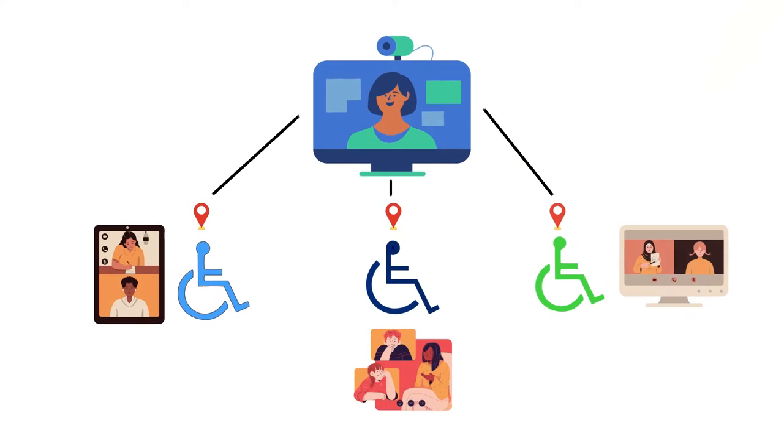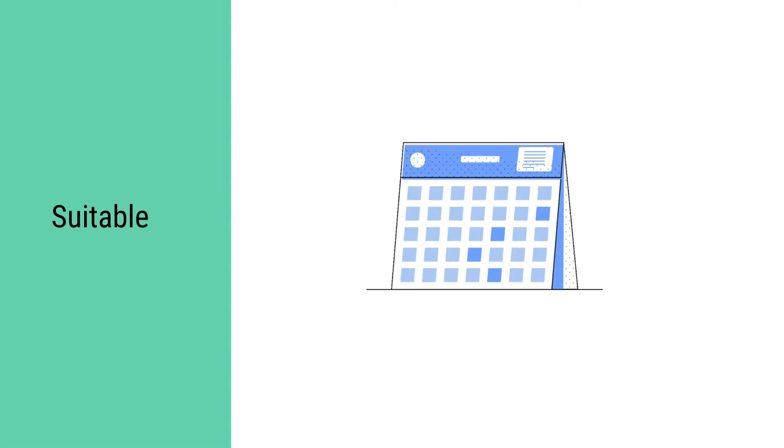Moreover, they are not required to leave the physical environment to study at a distant place. Second, it is suitable. The open and distance learning system fits into the irregular schedule of people with disabilities. Third, it is flexible.